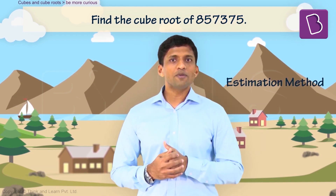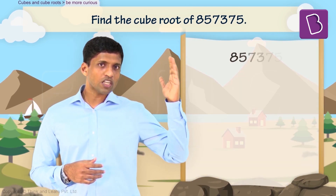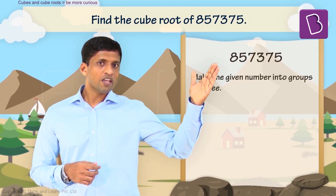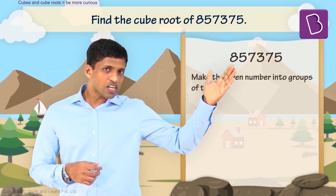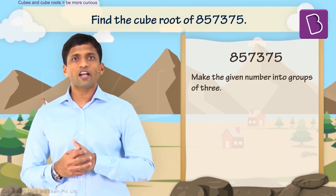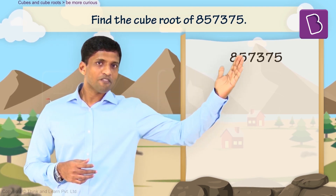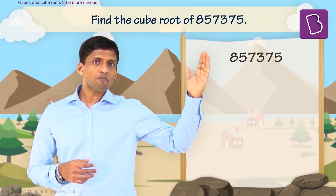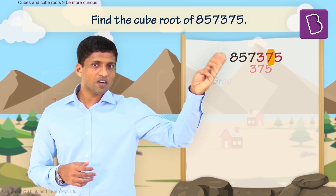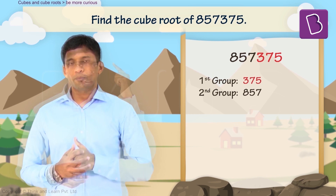This is an estimation method. First, start making groups of three digits starting from the rightmost digit of the number. So in this case, if I start from the rightmost, 375 will be the first group and 857 will be the second group.